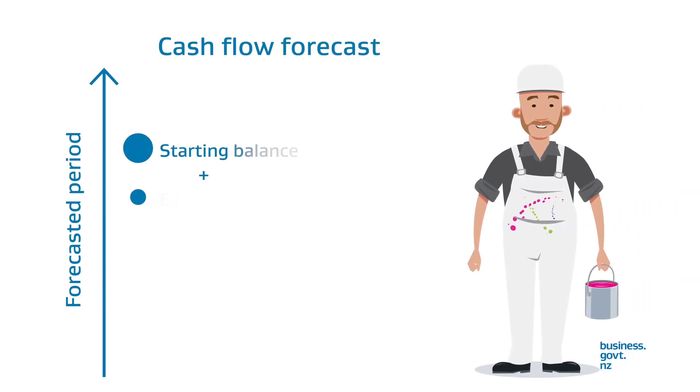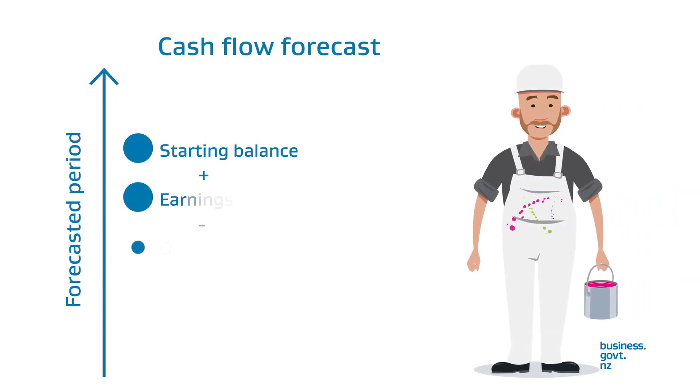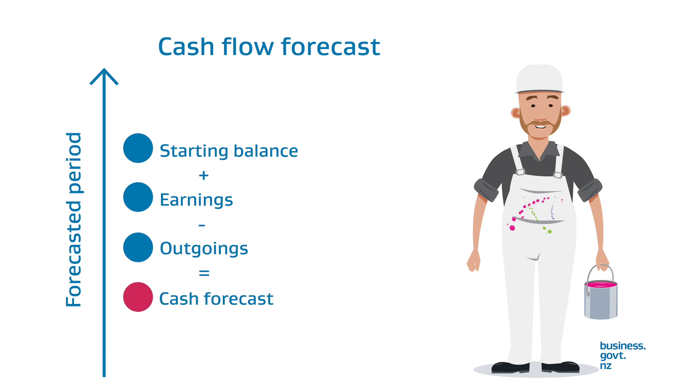Finally, take your starting balance and tally your earnings and outgoings through the forecasted period. This will show how much cash you are forecasted to have. When using accounting software, you should receive the same result, but the software will do the calculations for you after you've input your data.